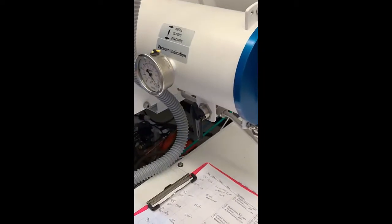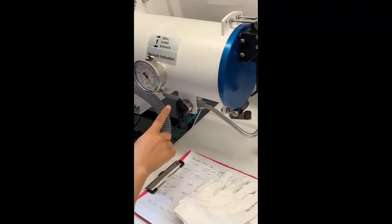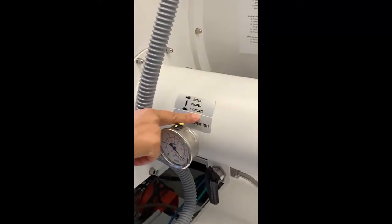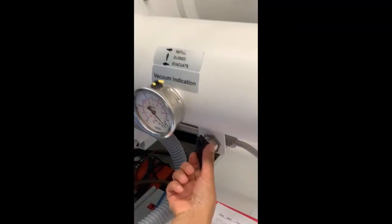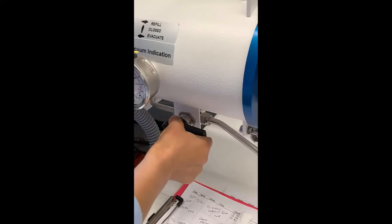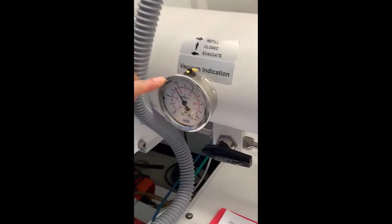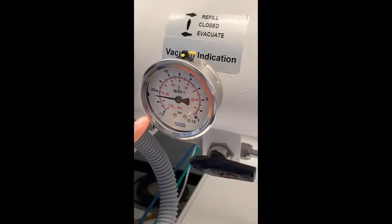And then you begin to evacuate and refill. This step must be done three times. So to evacuate, you turn the black lever all the way to the left until the pressure decreases all the way to negative one.